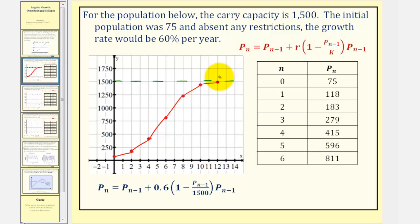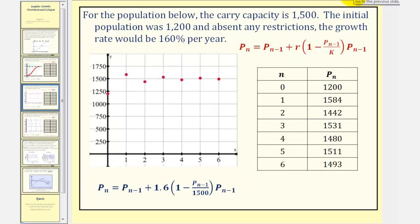But again, as just mentioned, this is not always the case. So let's take a look at a second example. For the population below, again, the carrying capacity is 1,500. But in this case, the initial population was 1,200.